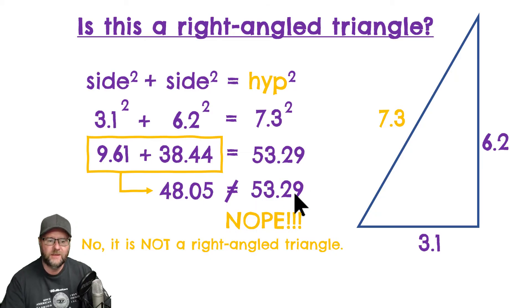That's our process for proving if something is a right angle triangle if we're given the three measurements. All right, hopefully, that all made sense to you. Well done.